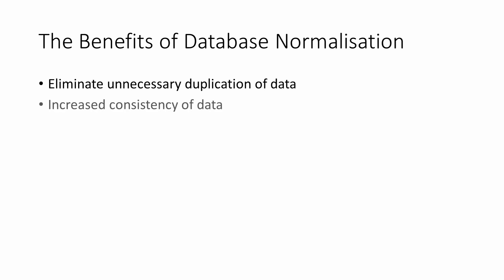If it's only possible to edit a particular data item in one place — for example, somebody's surname — then there's no possibility of having different values for the same thing in different places. Data are consistent.